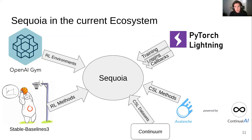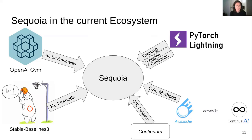A noteworthy example is Avalanche, which is used as a source of continual supervised learning methods. Likewise, Stable Baselines 3 is a framework that we use to provide backbones for RL. Sequoia provides a jumping off point called the base method, which leverages PyTorch Lightning for high performance training, and is a very easy entry point for new users.